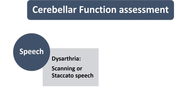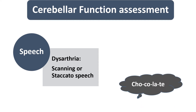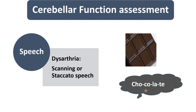After eye signs, we should speak to the child to assess speech. The child may have dysarthria — scanning or staccato speech. We ask the child to speak certain words and observe. Because of the defect in articulation, the child will have slow, ataxic, slurred, or sometimes jerky speech due to dyssynergy of the phonation muscles. The child will scan the word and speak in monosyllables. For example, if asked to say 'chocolate,' the child will say 'cho-co-la-ta.' The characteristic type of dysarthria in cerebellar disease is scanning or staccato speech.